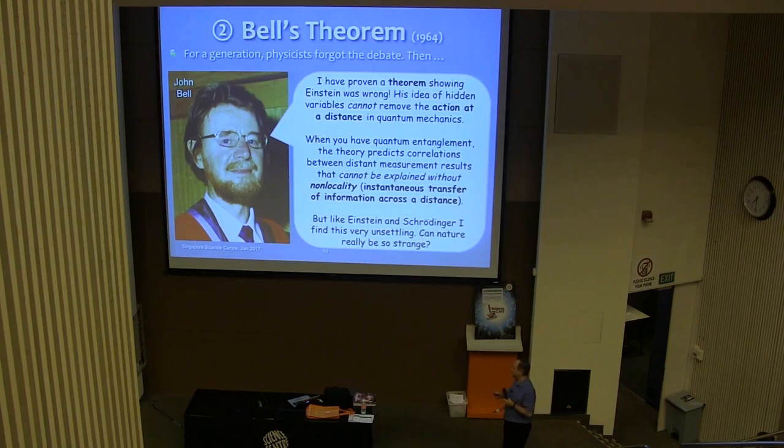So Bell, you might think, because he proved Einstein was wrong, that he was on Bohr's side, but that wasn't the case at all. He actually was like Einstein and Schrodinger. He was very concerned about this whole Copenhagen interpretation and this non-locality, and he found this whole thing very unsettling and really wondered, can nature really be so strange? Can it really be the case that these correlations exist, which imply that I can't explain them without having transfer of information instantaneously across a distance?